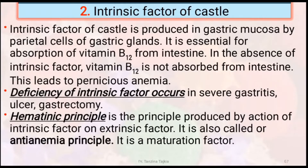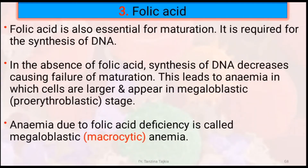Secondly, intrinsic factor of Castle: it is produced in the gastric mucosa by parietal cells of the gastric gland. It is essential for absorption of vitamin B12 from the intestine. In the absence of intrinsic factor, vitamin B12 is not absorbed, leading to pernicious anemia. Deficiency of intrinsic factor can occur in severe gastritis, ulcer, or gastrectomy. Folic acid is also essential for maturation; it is required for synthesis of DNA. In the absence of folic acid, synthesis of DNA decreases, causing failure of maturation. This leads to anemia in which cells are larger and appear in megaloblastic states.